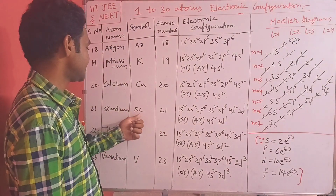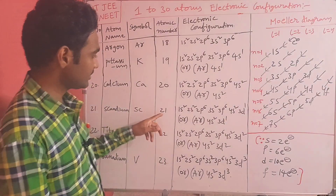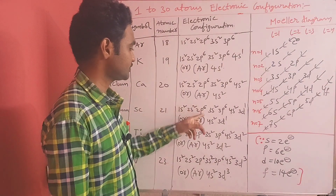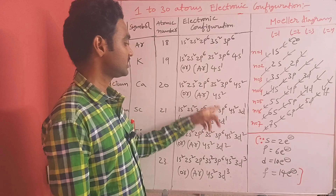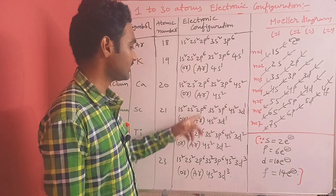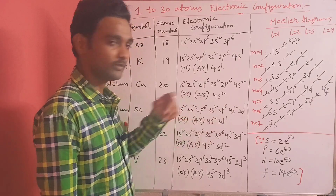Scandium (Sc), atomic number 21: 1s2 2s2 2p6 3s2 3p6 4s2 3d1, overall [Ar] 4s2 3d1. The d orbital capacity is 10 electrons — it can hold up to 10 electrons.